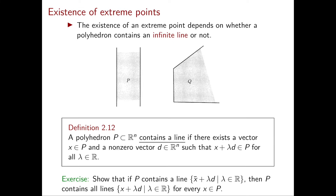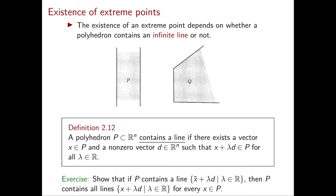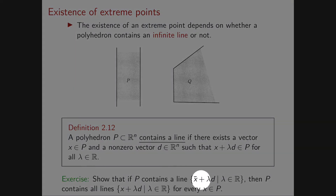To fully understand what it means for a polyhedron to contain a line, consider the following exercise. It shows that you can slightly change the definition and still obtain an equivalent one: instead of 'there exists a vector x in P,' you could write 'for every vector x in P.' So if P contains one line x̄ + λd, then P contains all the lines x + λd for every x in P.